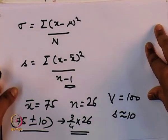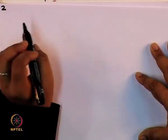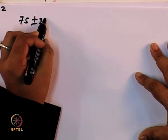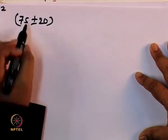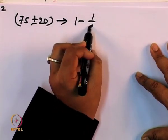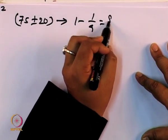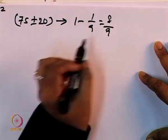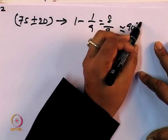Similarly, for two standard deviations, you have 75 plus or minus 20, which will contain 1 minus 1/9, that is 8/9 of the population — roughly 90 percent of the population.